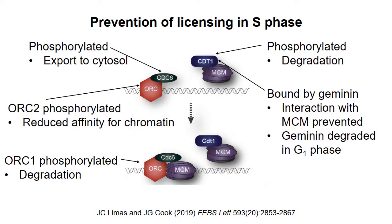When the cell enters S phase, it needs to make sure that licensing of replication origins stops before DNA replication begins. Otherwise, an origin on a newly synthesized piece of DNA could be licensed, and the same DNA could be replicated more than once in the cycle. This can lead to chromosomal abnormalities, which can be very harmful to cell function.